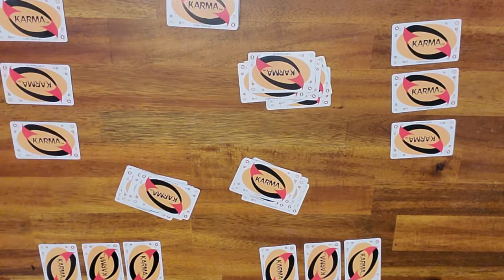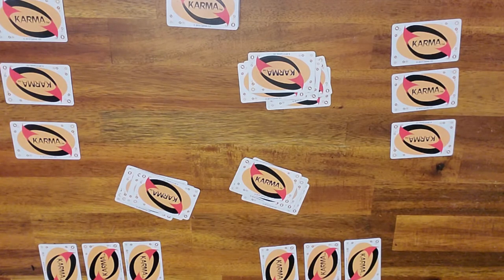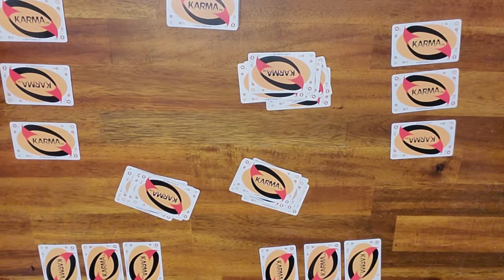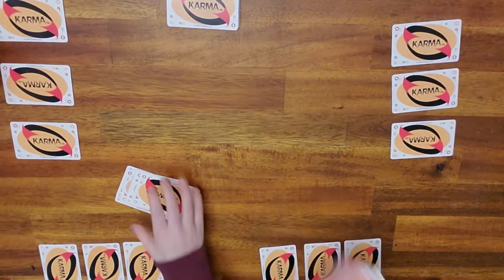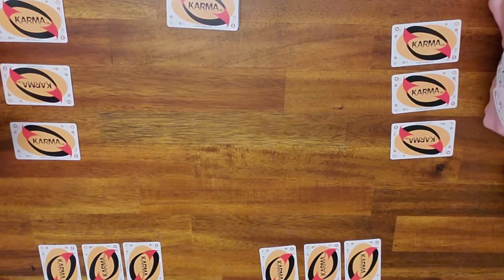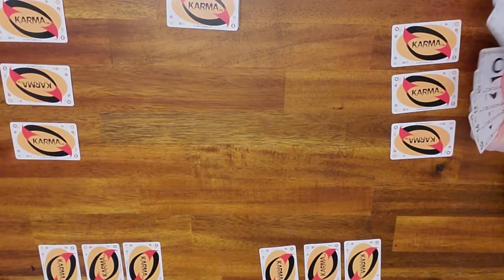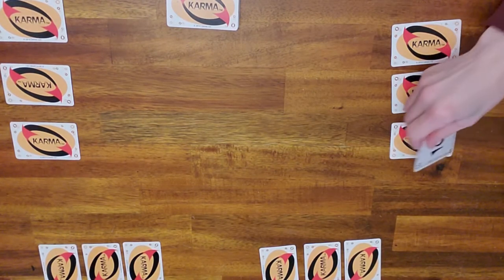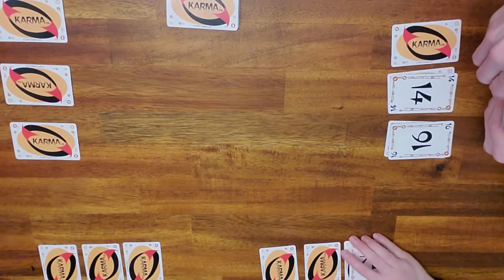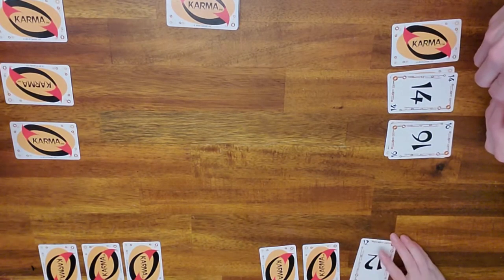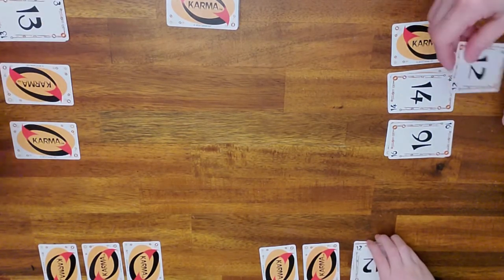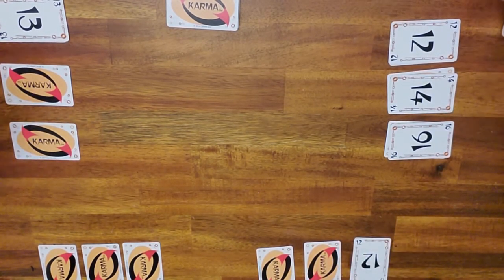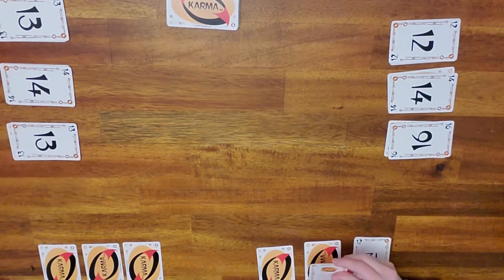So these six cards, you will choose three of them to play on top of these blind cards. The best cards to play are going to be your highest cards. That's usually how I recommend. Yeah, we'll go like that.